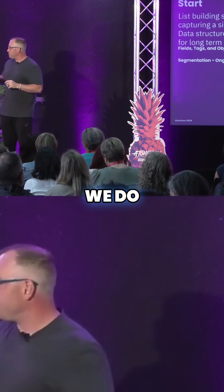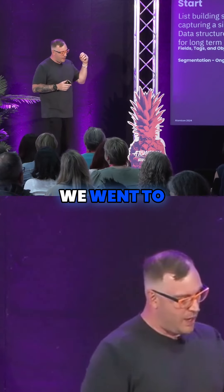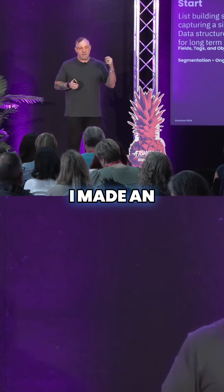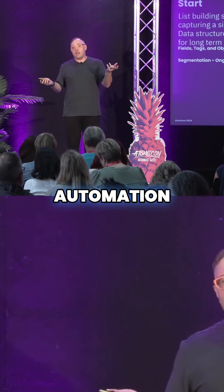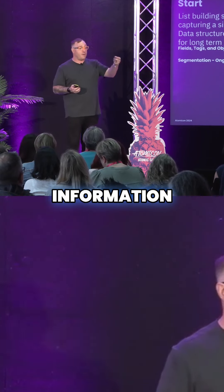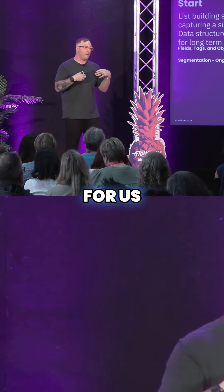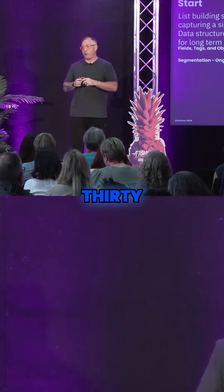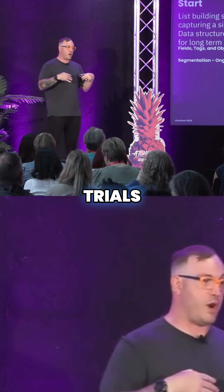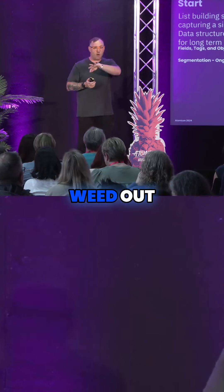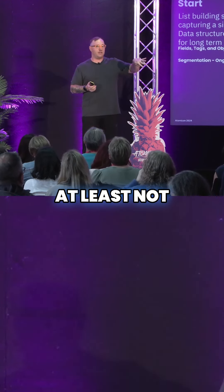So what did we do? We went to ActiveCampaign. I made an automation that fires off information about the contact whenever a new trial is started for us. We get about 30,000 trials a month. I look at all of those trials and I immediately weed out all the freemium domains — I'm not going to be able to enrich that, at least not accurately, so let's get rid of it.